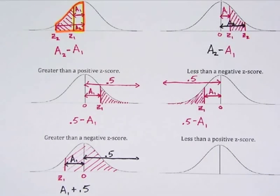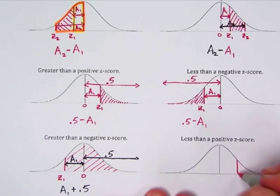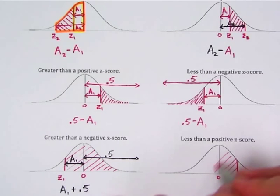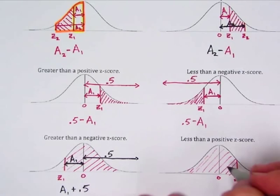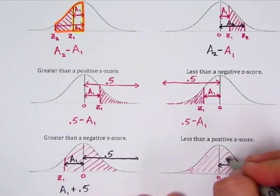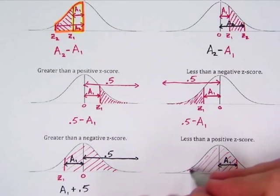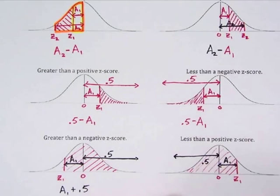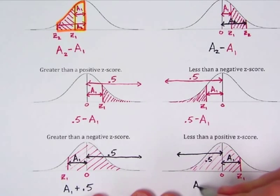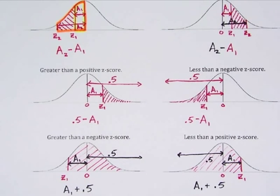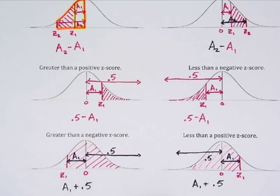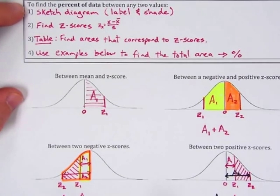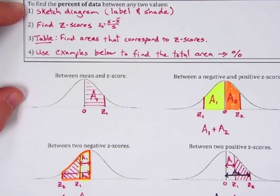For less than a positive z-score: here's a positive z-score and our mean. We want everything to the left. The table gives us the area between the mean and the z-score, and everything to the left is 0.5. So the total area is A₁ + 0.5. These are all your possible scenarios — that's why it's very important to sketch the diagram first, so you can match it up and know whether to subtract or add.